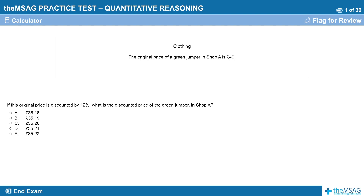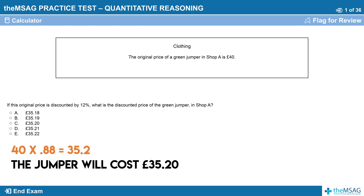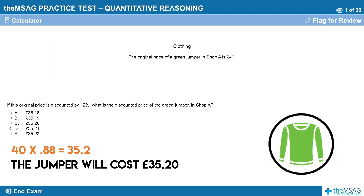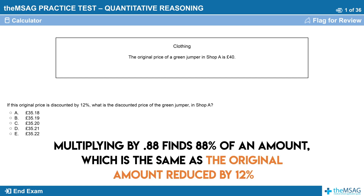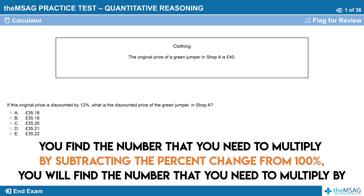40 multiplied by 0.88 gives 35.2. The jumper will cost £35.20. Multiplying by 0.88 finds 88% of an amount, which is the same as the original amount reduced by 12%. By subtracting the percentage change from 100%, you will find the number that you need to multiply by.